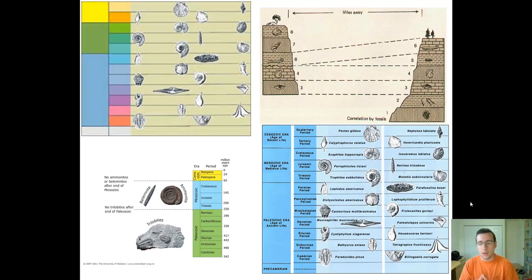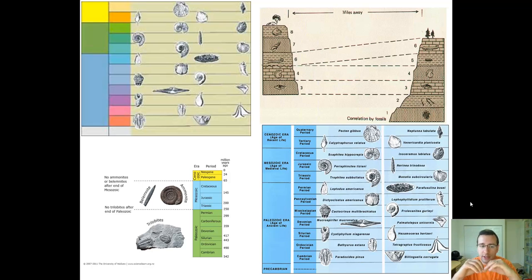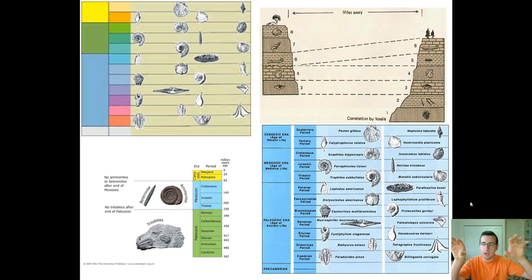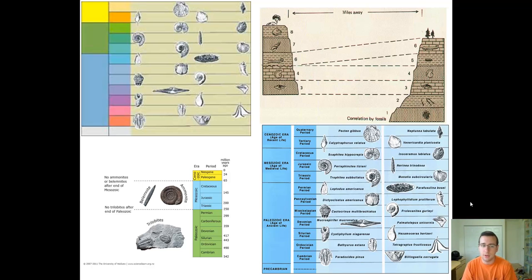Likewise, fossils like ammonites and belemnites are from the Mesozoic era — they did not survive into the Cenozoic. So if you see those fossils, you know they're from the era when dinosaurs dominated the Earth. Scientists use these index fossils to determine what time period certain layers of rock belong to. Sometimes rock areas are elevated or depressed due to crustal movements, but you can use these fossils to identify which area is older and which is younger. Remember that by sedimentation rules, what's near the surface is typically younger.